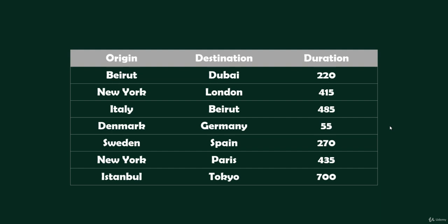Each of those columns represents one field that I might want to keep track of about my data. And each row, meanwhile, is going to represent an individual flight. So here, for example, is one row representing a flight from Beirut to Dubai, and that flight just happens to take 220 minutes.